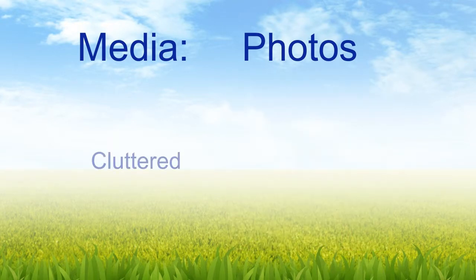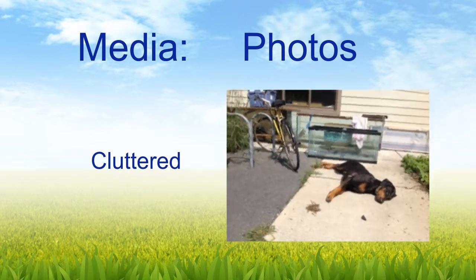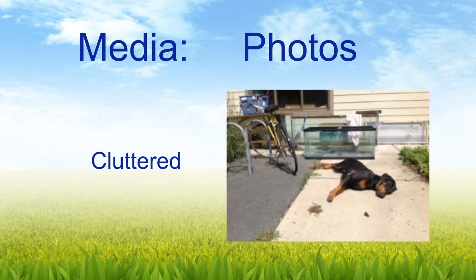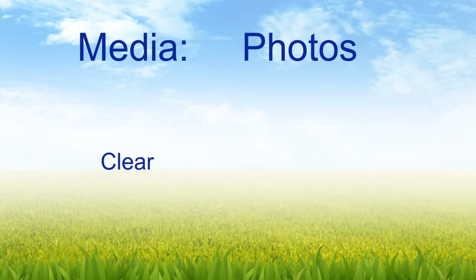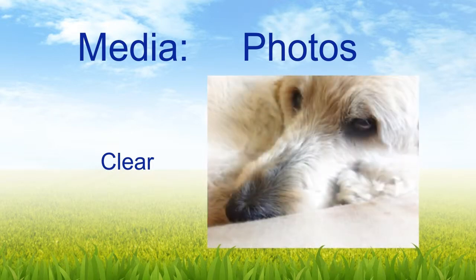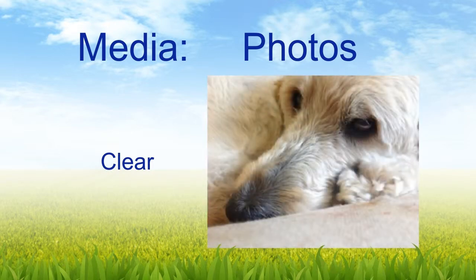You don't want a cluttered photograph — here's an example of a dog laying with a lot of junk around it, so you're not sure if it's the aquarium, the bicycle, or the dog. It distracts from what the viewer is trying to understand. And then we have an example of a fairly clear shot, which is Waffle — who you saw on the front page — curled up on a chair, and it connotates exactly what we're trying to achieve.